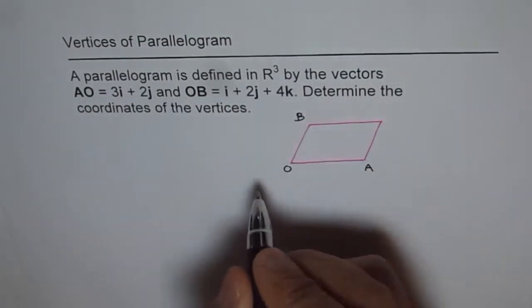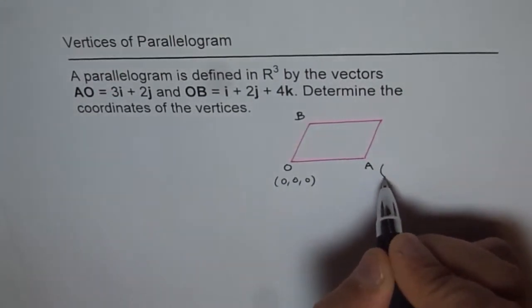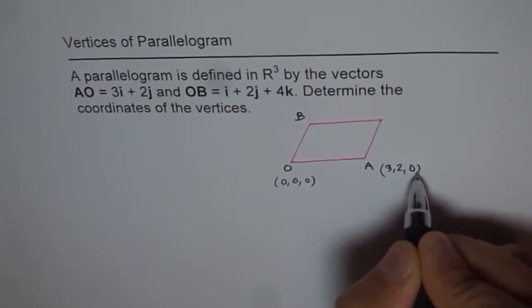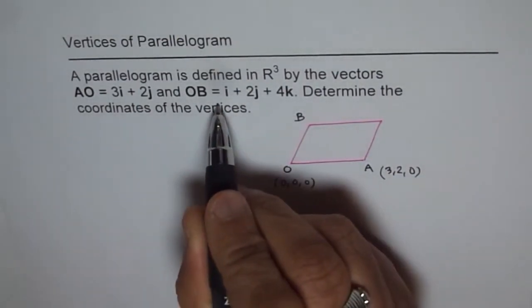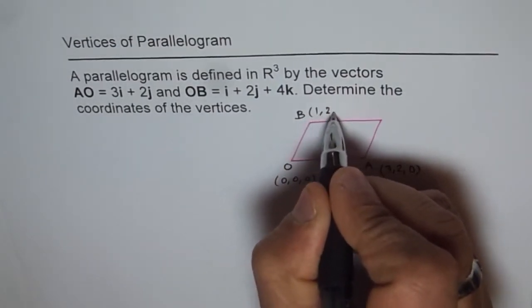Write down the coordinate points. This is (0, 0, 0) and A is i, j, k, so it is (3, 2, 0). And B is (1, 2, 4).